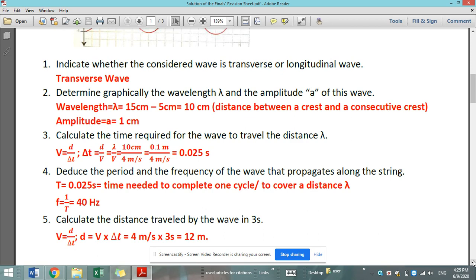But calculate the distance traveled by the wave in 3 seconds. Now v equals d over delta t, as I mentioned, since the wave is propagating at a constant speed, so we can use this formula. Otherwise, we cannot. When you grow up, when you reach greater, then you'll know or you're going to study other cases. So now by cross multiplication, d equals v times delta t, 4 meter per second times 3 seconds, we have all the values in the SI unit, so we get the distance in meter.